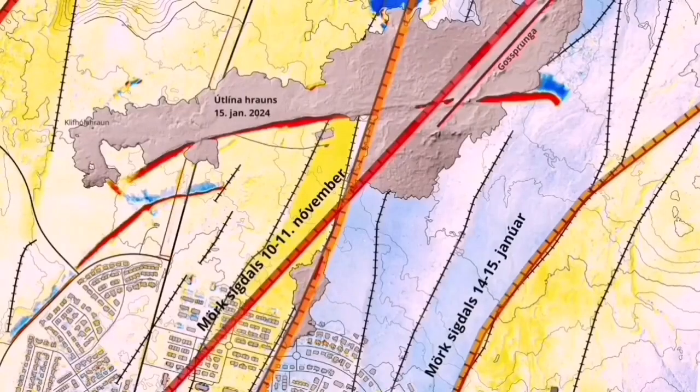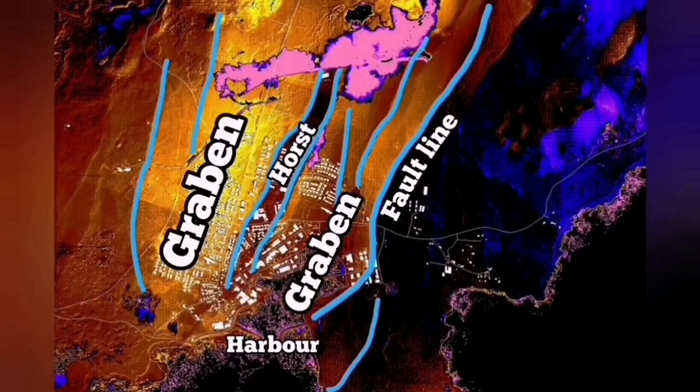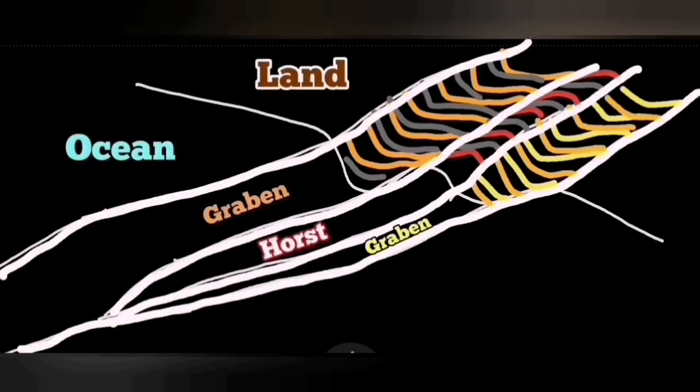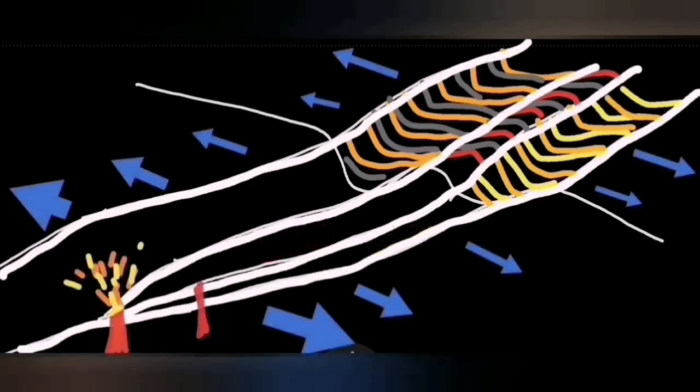Usually, the stretching of the ground causes fall down of the fault lines and the middle part, which is the Grindavik Rift Valley. As you can see, it has created this kind of fault systems there, a rift.